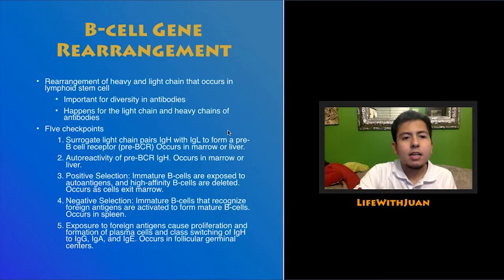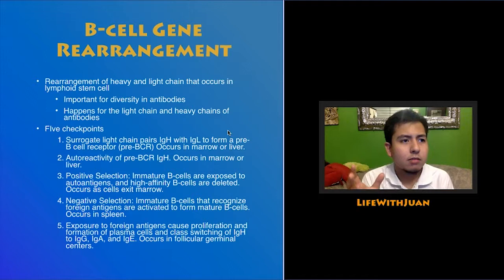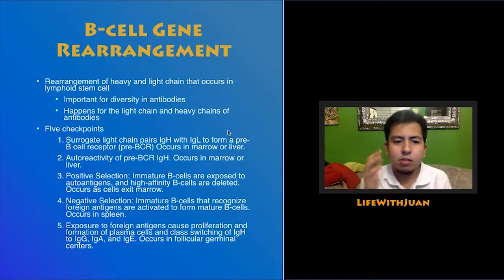B cell gene rearrangement is essentially the rearrangement of the heavy and light chains that occurs in the lymphoid stem cell. This is important for antibody diversity because each B cell can only display one kind of antibody. That's why you have so many B cells floating around in your system — to provide protection against a wide variety of bacteria and viruses.